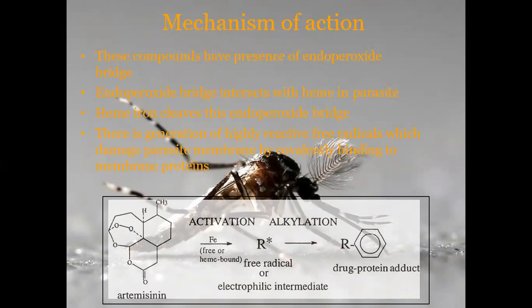The mechanism of action is clear. These compounds have the presence of an endoperoxide bridge, and the endoperoxide bridge interacts with heme in the parasite. Heme iron cleaves the endoperoxide bridge, generating highly reactive free radicals.